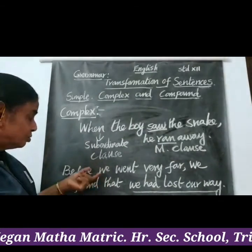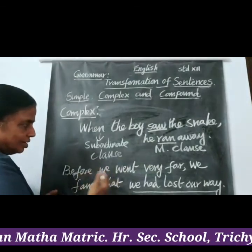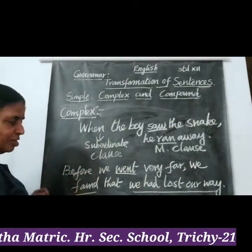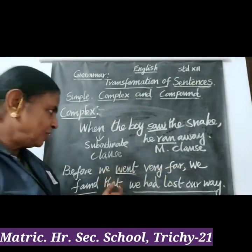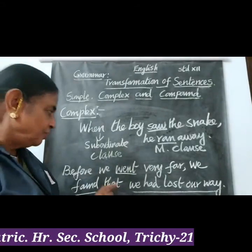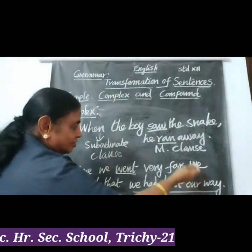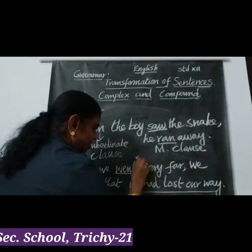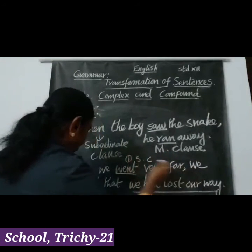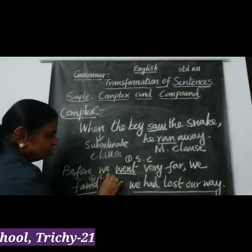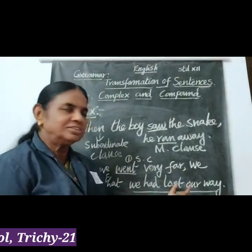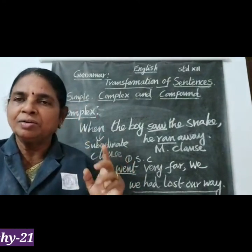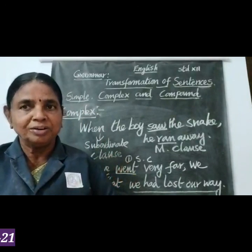Now look at the other clauses. 'Before we went very far' — 'went' is a finite verb, but the clause is incomplete. 'We found that' — 'found' is also a finite verb, but what did you find? Incomplete. So 'before we went very far' is the first subordinate clause, 'we found that' is the second subordinate clause, and 'we had lost our way' is the main clause. A complex sentence has one main clause and one or more than one subordinate clauses.